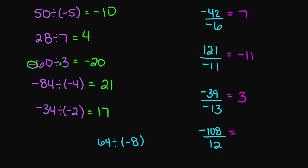Here you have negative 108 divided by 12 — you're going to get negative 9 as your answer. And then the last one: 64 divided by negative 8 gives you negative 8 as your final answer.